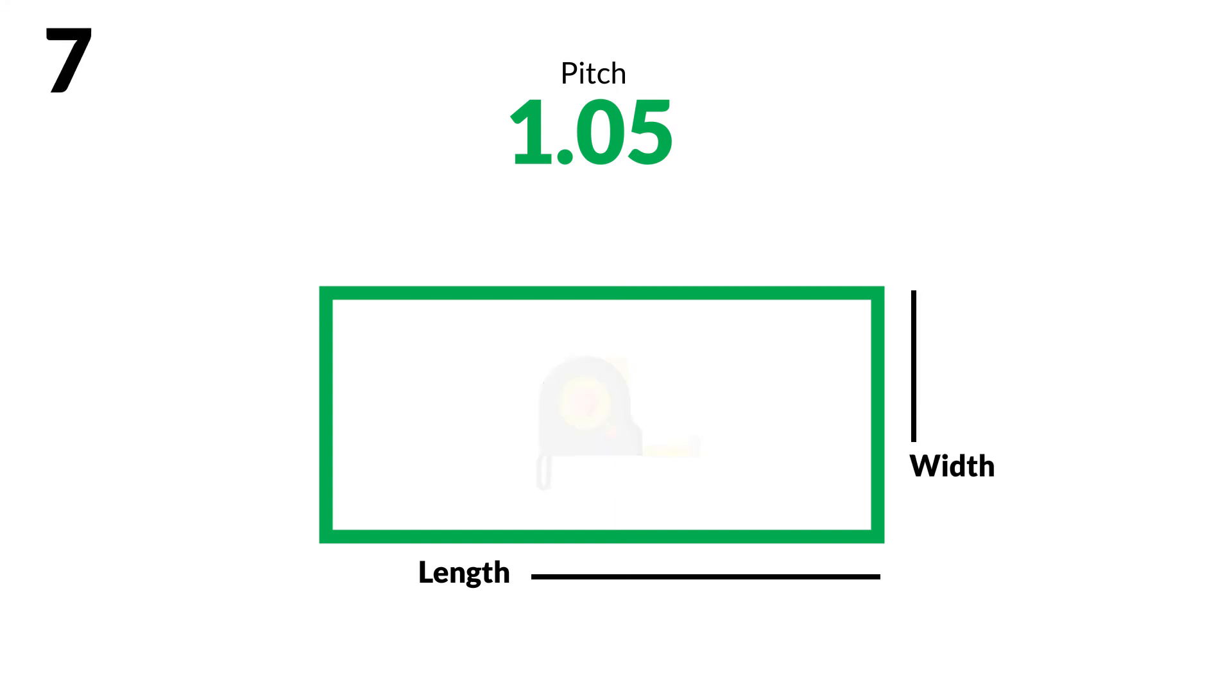Number 7: Multiply your house length by your house width to get the area. Number 8: Multiply the area by your roof's pitch.